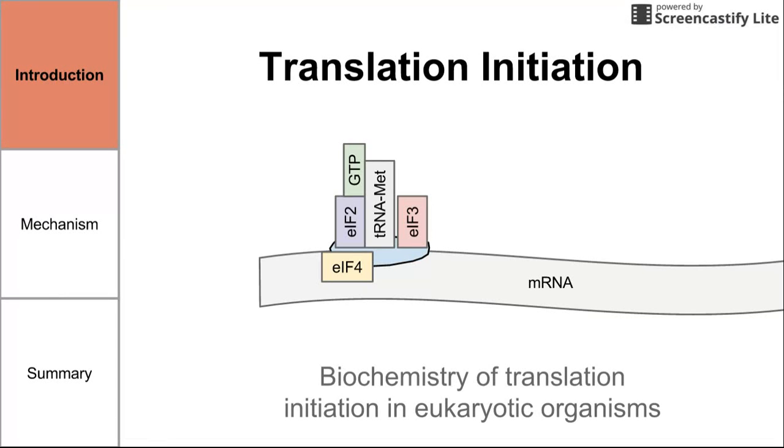Alright, so this is going to be a short video on translation initiation. This is the first step of translation, the process by which mRNA is transcoded into protein. This is specifically for translation in eukaryotic organisms, and we're going to talk about the biochemistry behind it, how the ribosome works, how the ribosome attaches, and how initiation factors help with the initiation of translation.